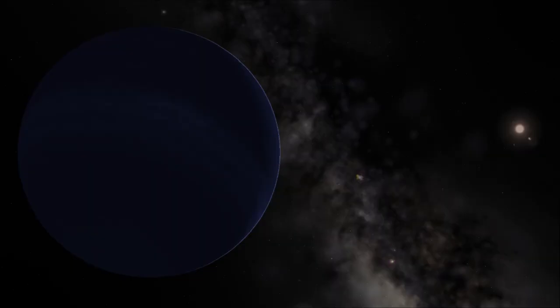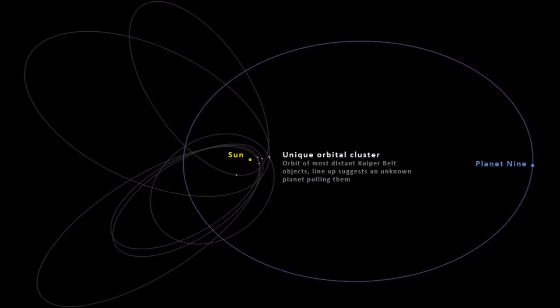Recently, scientists have detected what seems to be a very massive object in the outer solar system. While they haven't directly seen the object yet, they have been able to see the gravitational effects of this object.